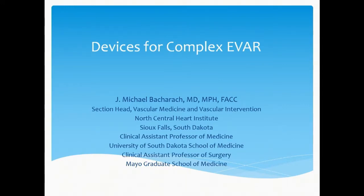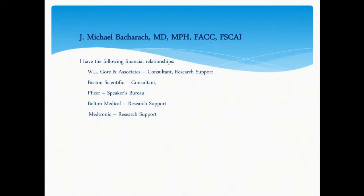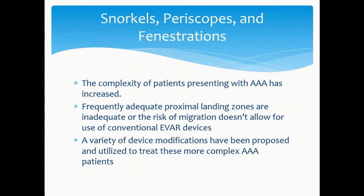If that's the take-home message — that's the only thing you learn from this whole talk and this whole series — that's probably the thing you should take home. So: snorkels, periscopes, and fenestrations. The complexity of patients presenting with abdominal aortic aneurysms has clearly increased. Frequently, adequate proximal landing zones are inadequate, or there's a risk of migration that doesn't allow for the use of conventional devices. There are a variety of device modifications that have been proposed and utilized to treat these more complex abdominal aortic aneurysms.